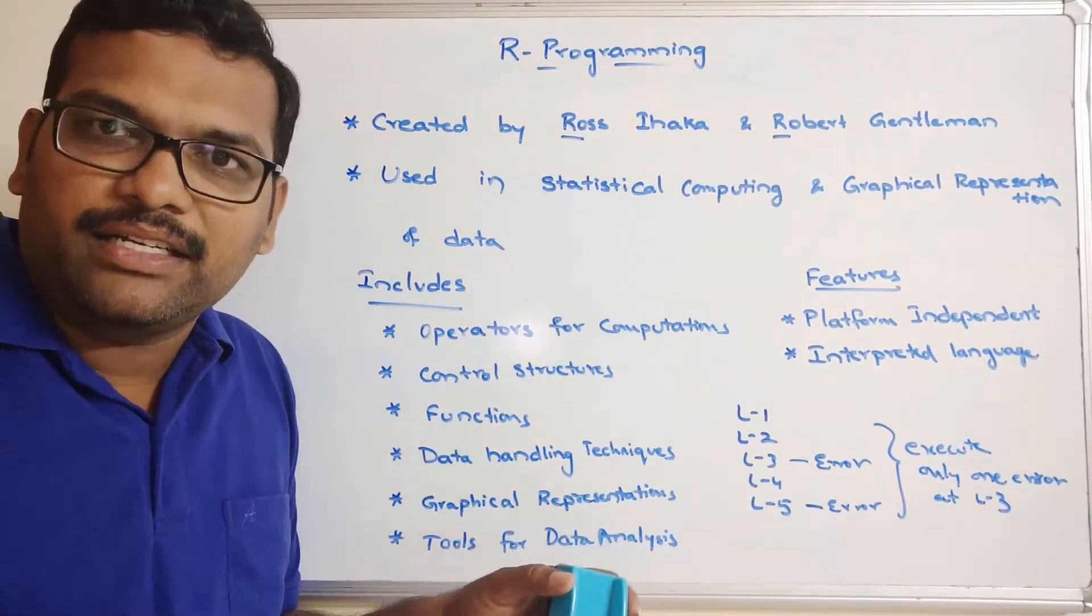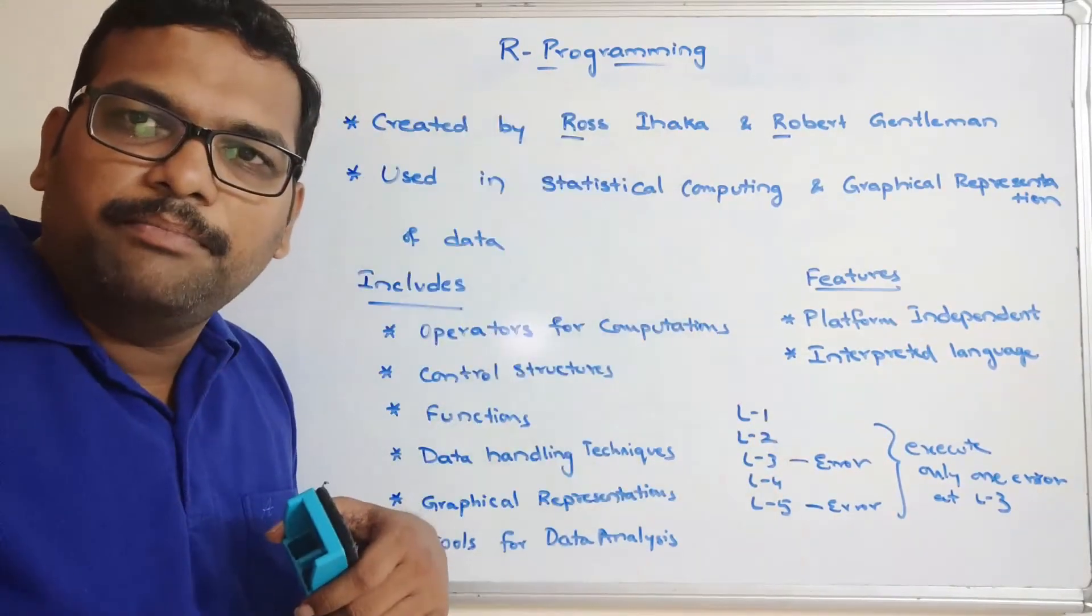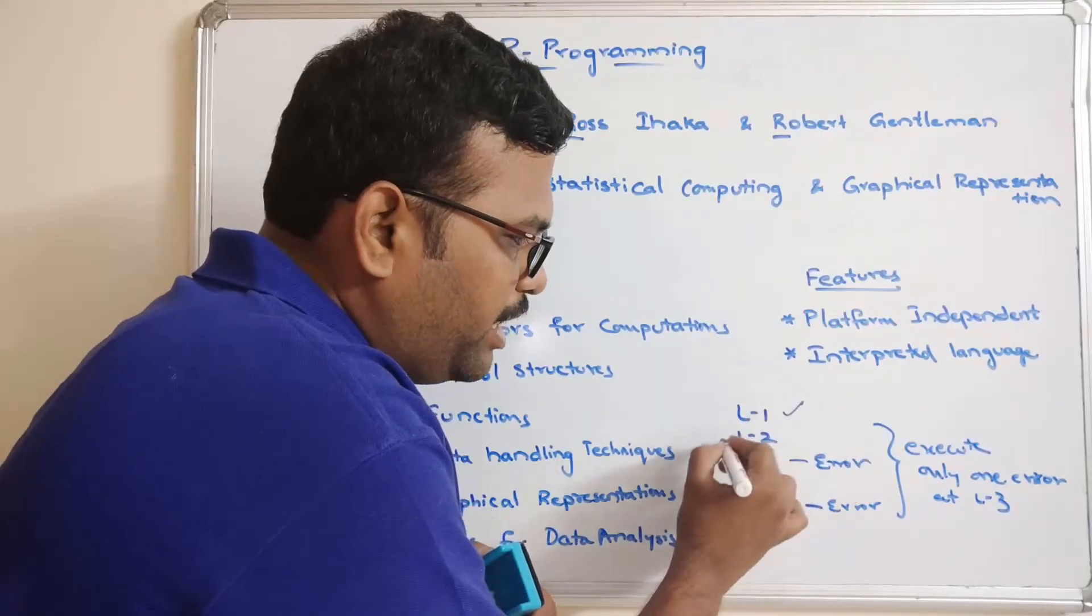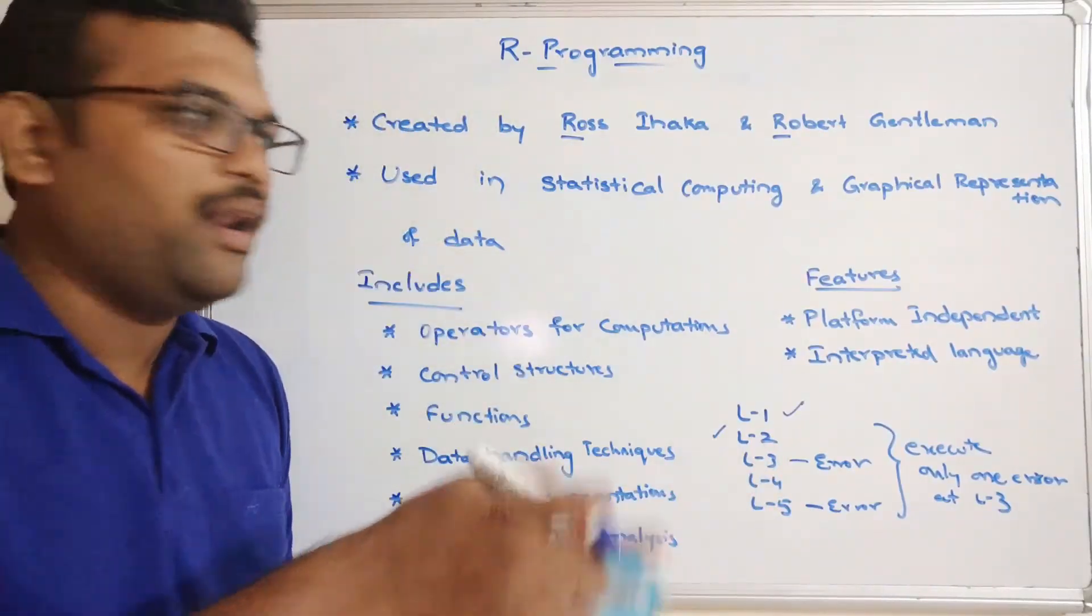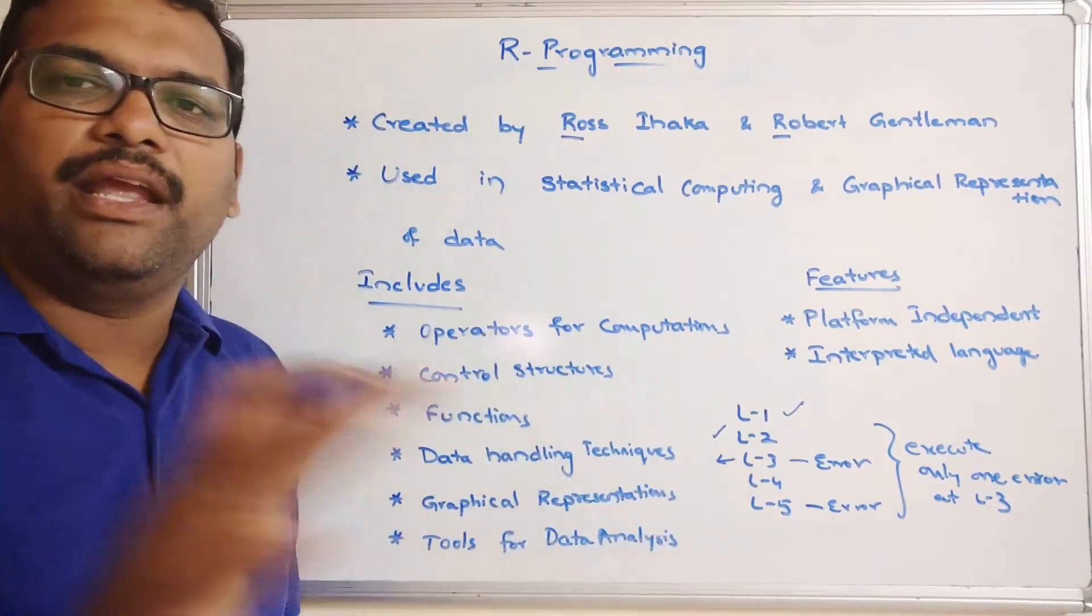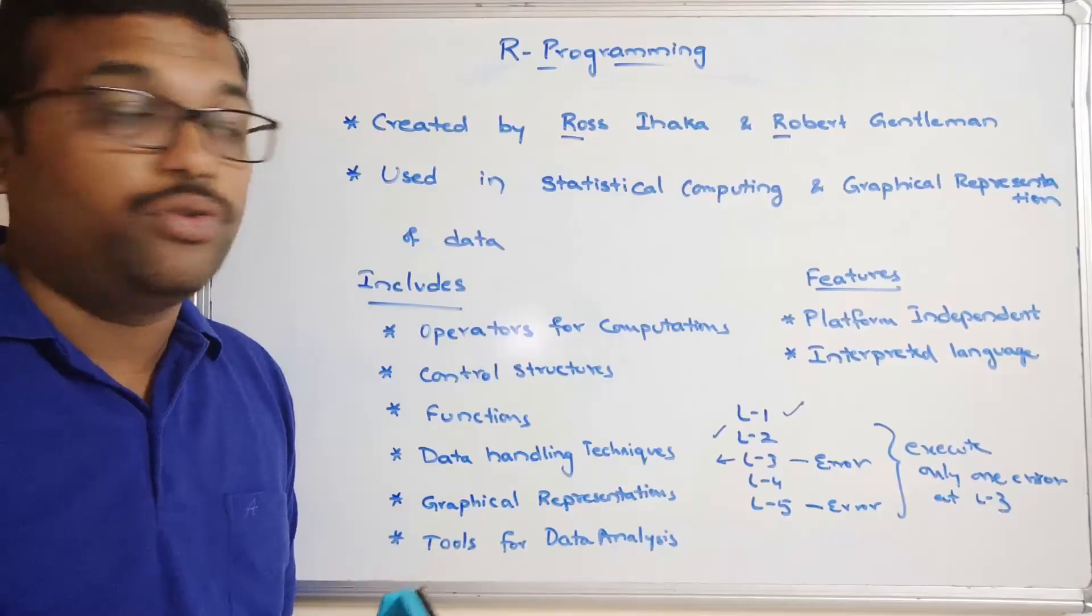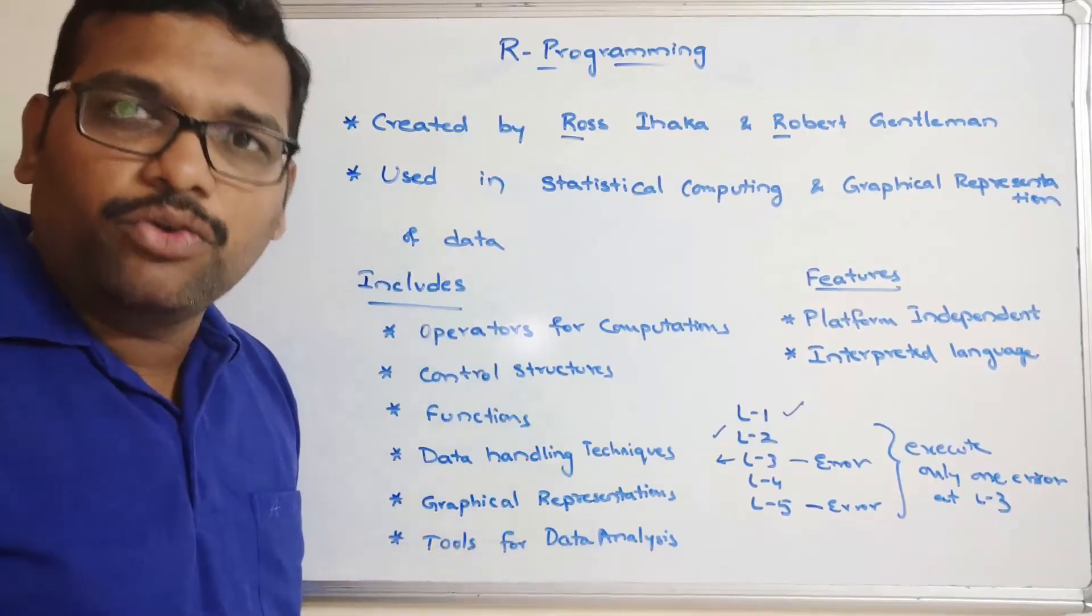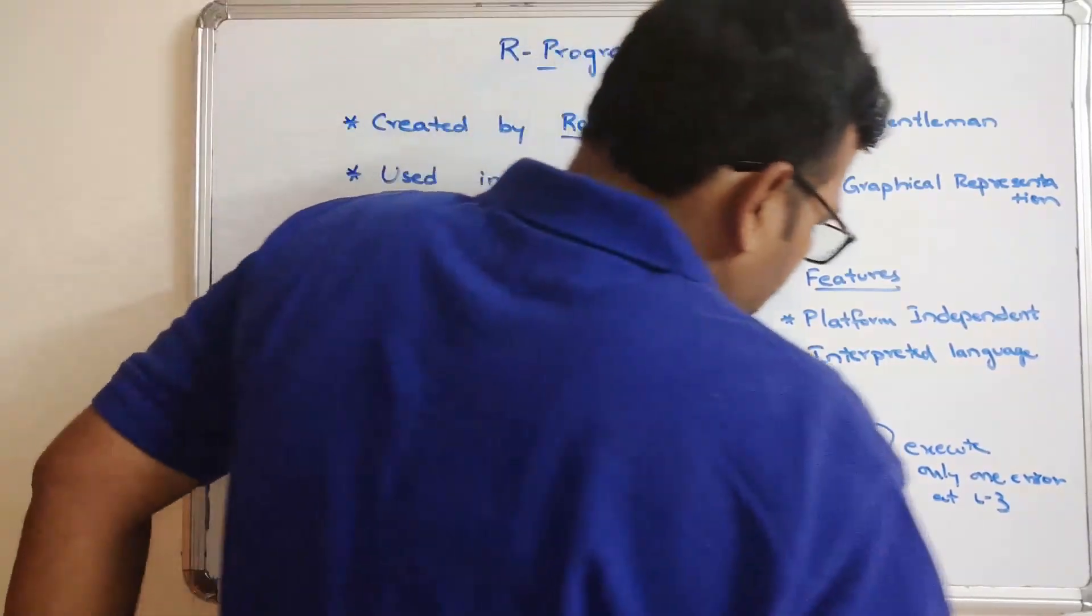It doesn't show both the errors because this is an interpreted language, where the transformation from high level language to the machine language will be done instruction by instruction, line by line. The first line will get executed, immediately the second line will get executed, and whenever the interpreter tries to execute line 3, it will get an error and raise an error. Until this error has been solved, L4 will not be executed. At a time, we will get only one error, so we call it interpreted. Here also, we are going to write the program and execute the program, but the conversion will be done line by line.